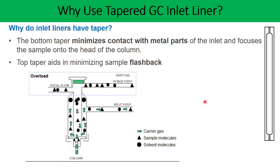The second important reason to consider using the taper liner is that the top taper aids in minimizing sample flashback. This is the top taper and this is the bottom taper. If your liner has a top taper, it minimizes flashback. Once the sample gets injected into the injector port, it undergoes vaporization and increases its volume. If your liner is not able to hold this increased volume, your sample along with the diluent can flashback, and because of this, your sample may travel through the inlet carrier gas line or towards the septum purge line — this is called flashback.